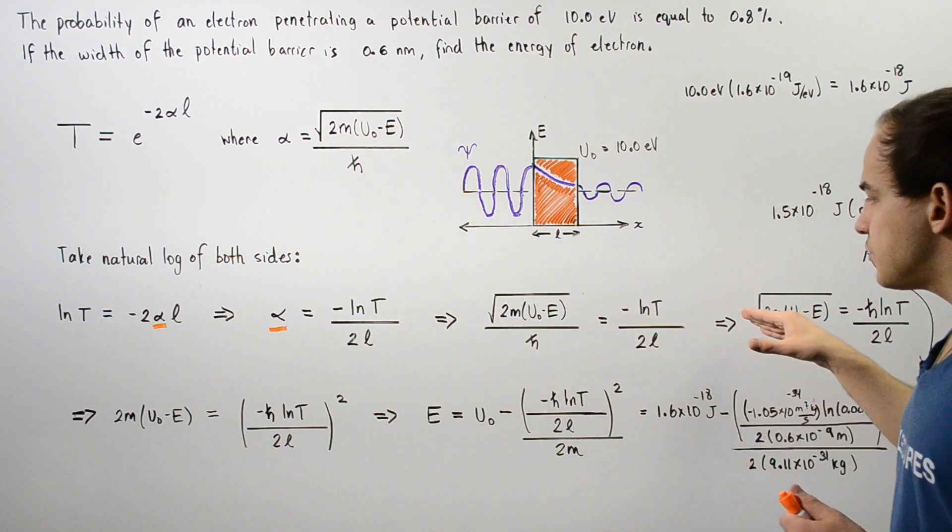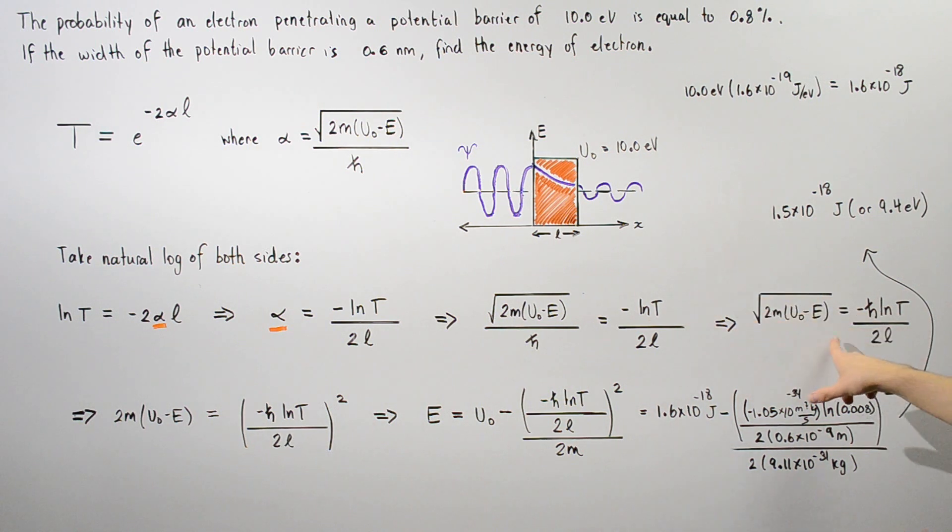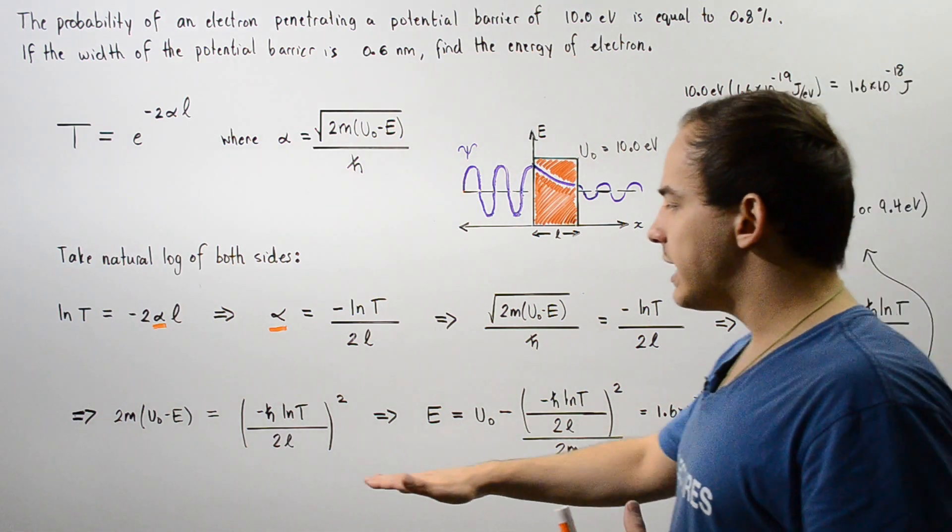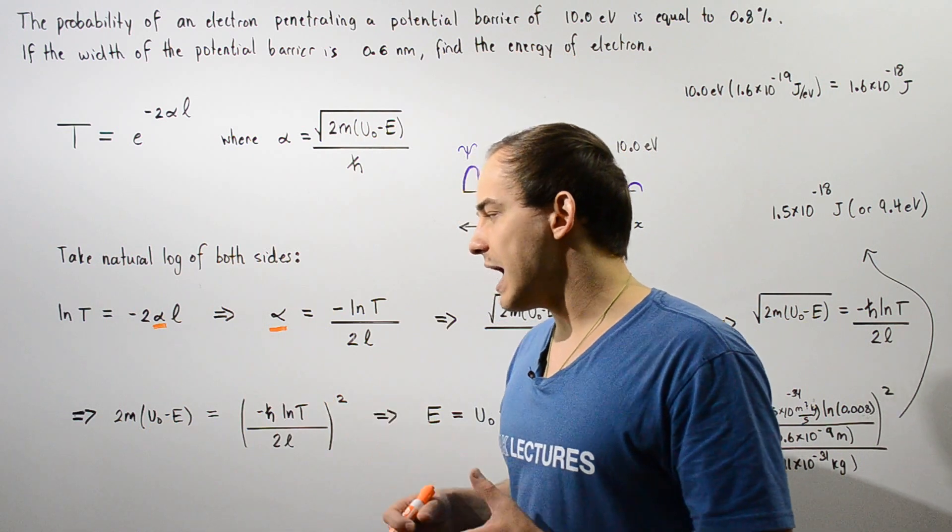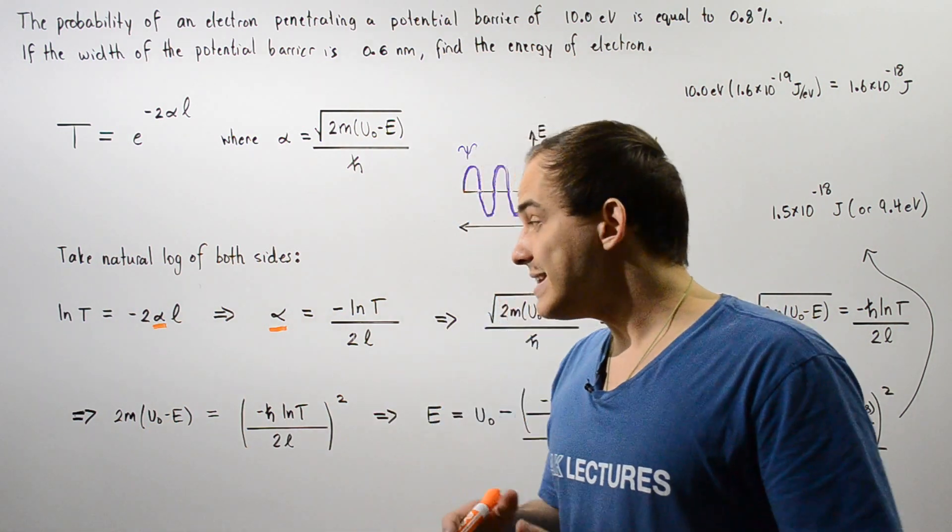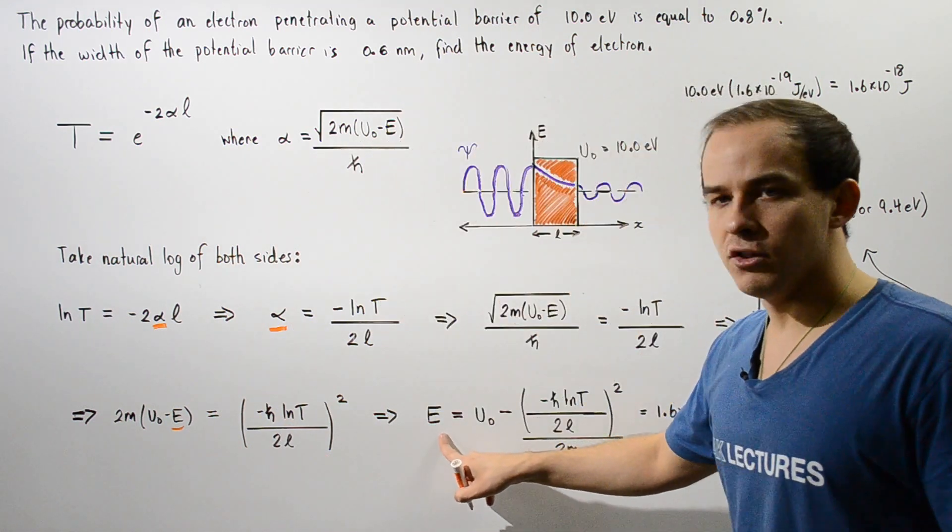Let's rearrange this by bringing our H bar to the right side. We get the following result. Now, in order to get inside of the radical, we have to get rid of that radical so we can take the square of the left and the right side. We get the following result. Finally, if we divide both sides by 2M and we rearrange for our E, we get the following result.